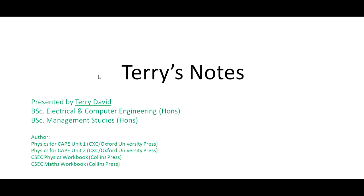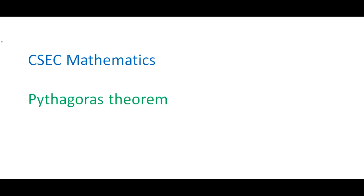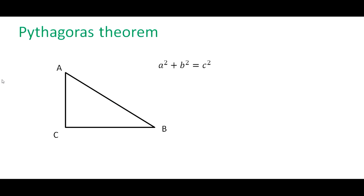Welcome to another episode of Terry's Notes and today we are going to be looking at Pythagoras' Theorem. Let's look at this right angle triangle here. We have triangle A, B, C, where C is a right angle.